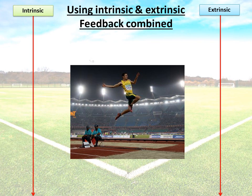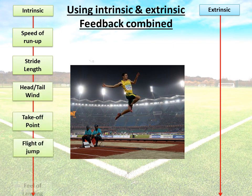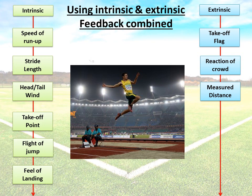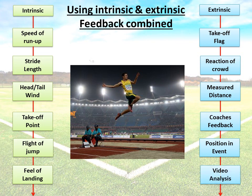Intrinsic and extrinsic feedback usually work well together — it's very rare that you use just one and not the other. Using a long jump athlete as an example: the intrinsic feedback includes feeling how fast they're running, whether they have the correct stride length, whether they can feel the wind in their face, whether they hit the takeoff point correctly, how the flight of the jump feels, and the feel of the landing. The extrinsic feedback would include whether the takeoff flag goes up, the crowd's reaction, the measured distance, the coach's feedback, their position in the event, and any video analysis done after each jump.